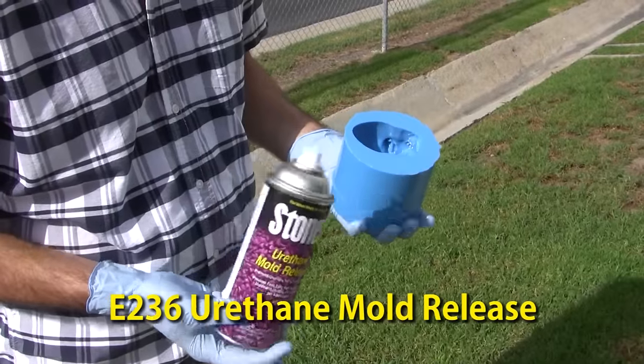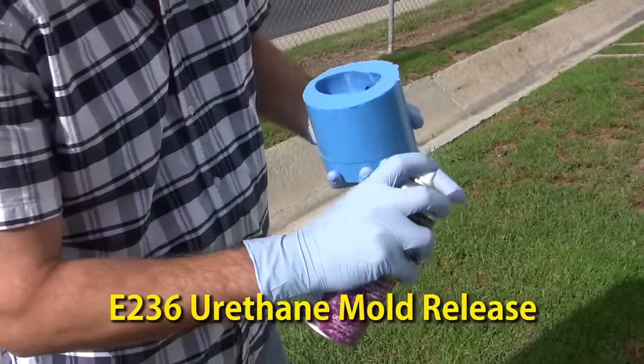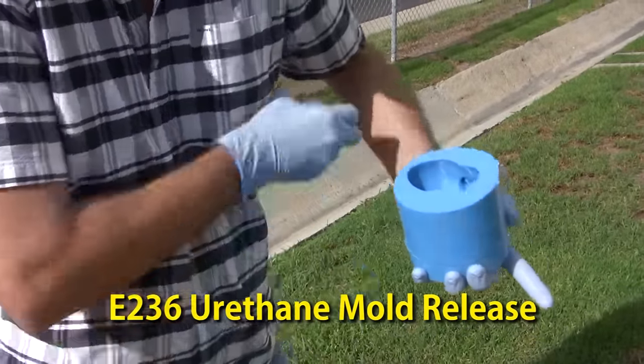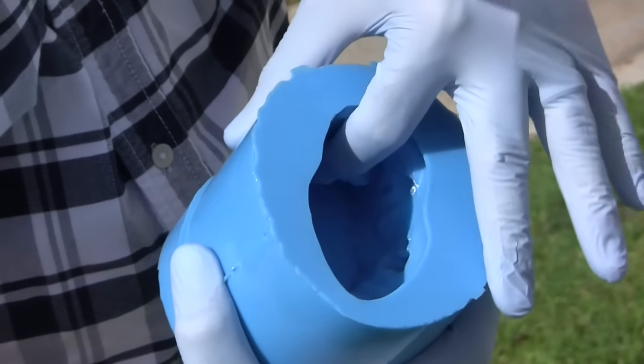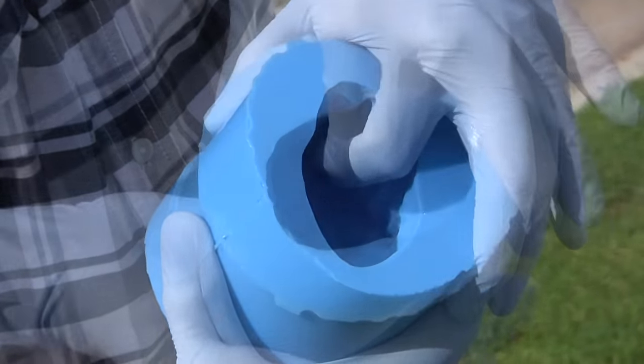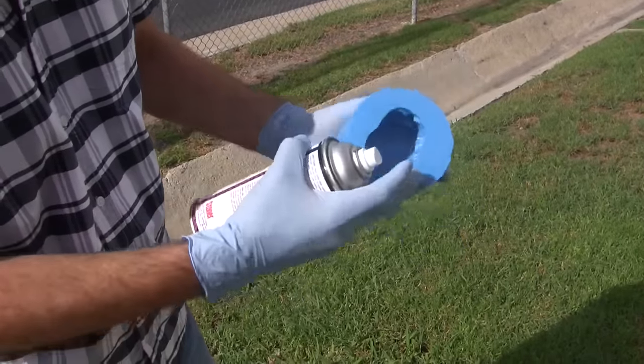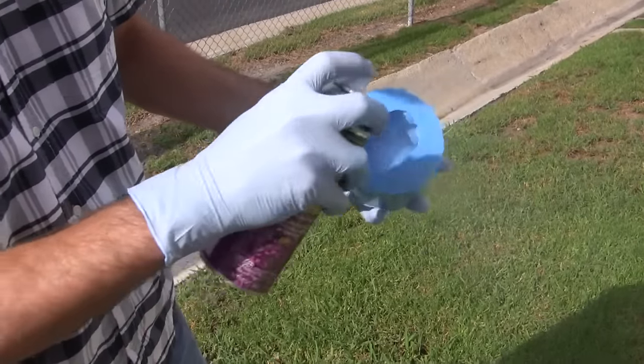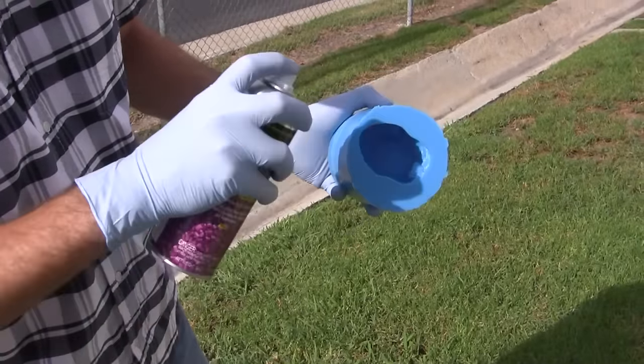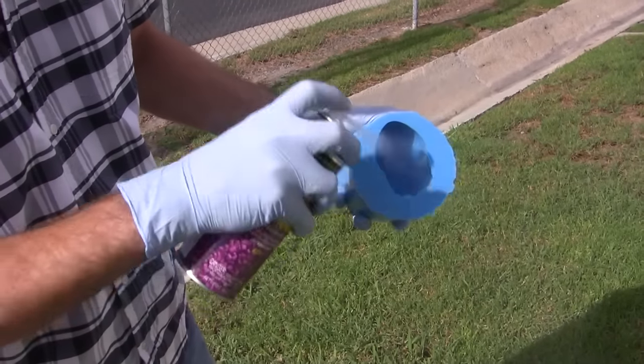We'll apply a mold release prior to casting our polyurethane into the mold. This will help extend the life of the mold and aid in part removal. We manually apply some mold release to the undercuts in any hard to spray areas in addition to a fine, even mist coating of release onto the exposed surfaces. Note that we're spraying outdoors to prevent contaminating our casting area with release.